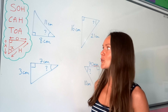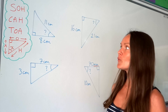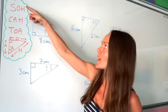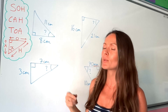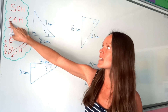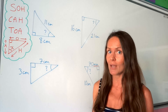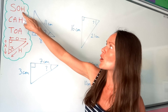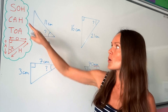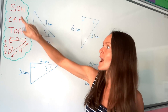In this video I'm going to show you how to calculate angles in right angle triangles using trigonometry. You may have heard of SOHCAHTOA — that's what we're going to be using. S stands for sine, C stands for cos, and T stands for tan. The letters O, H, and A stand for the sides in the triangle: O is opposite, H is hypotenuse, and A is adjacent.